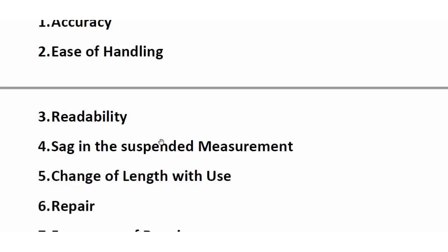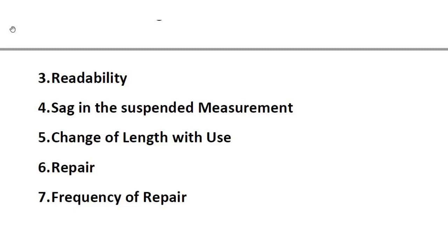Readability is slightly difficult for band chains as tags must be provided. Regarding sag in suspended measurement: error due to sag is acquired in normal metric chains, but in steel bands, sag is less due to their light weight. For change of length with use: in metric chains, length changes as links bend and stretch with repeated use.